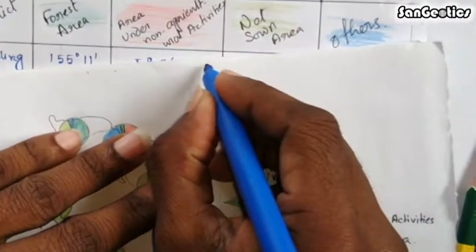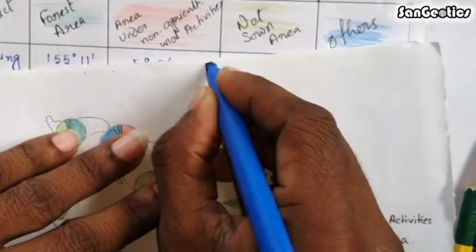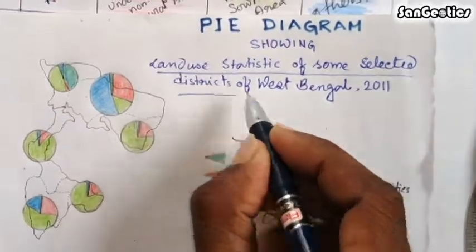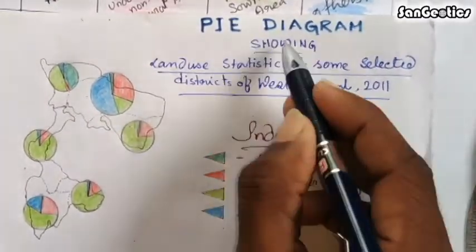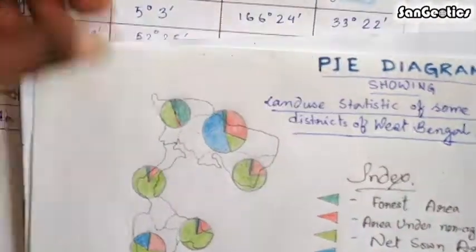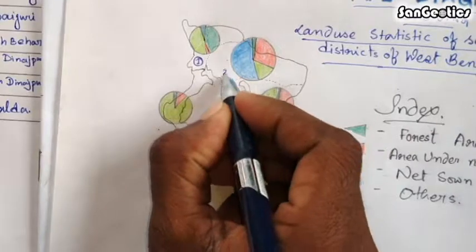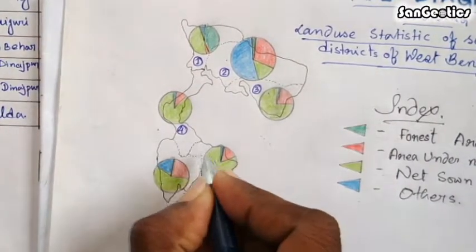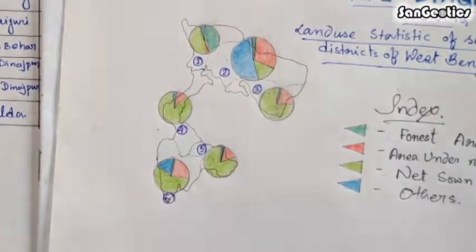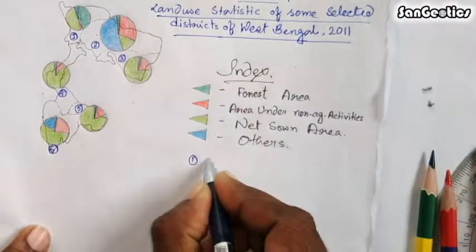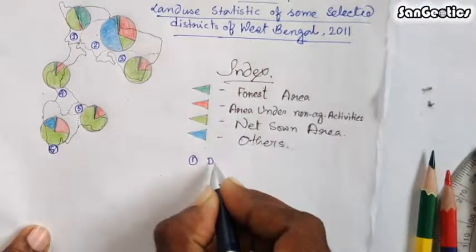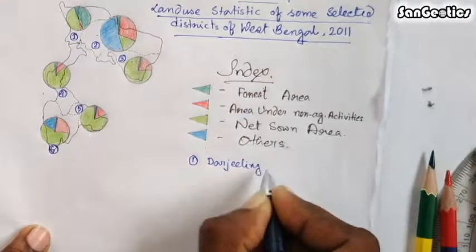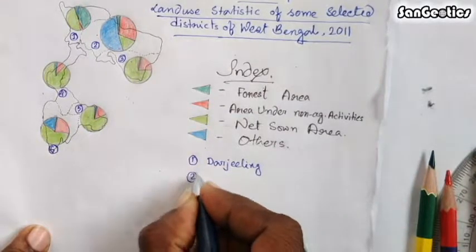Give a suitable heading: 'Pi diagram showing land-use statistics of some selected districts of West Bengal, 2011.' You can also number the districts as 1 – Darjeeling, 2 – Jalpaiguri, 3 – Coochbehar, 4 – Uttar Dinajpur, 5 – Dakshin Dinajpur, 6 – Malda.